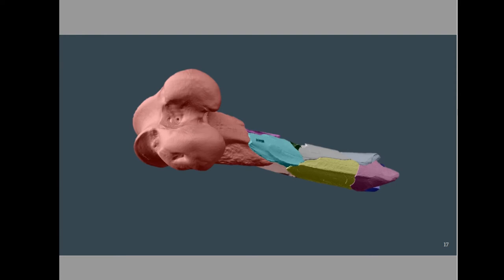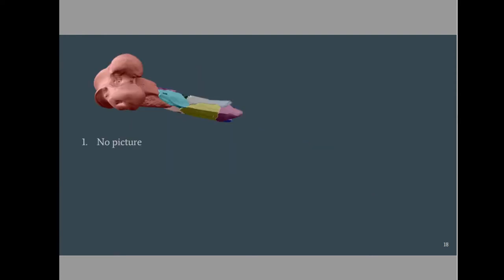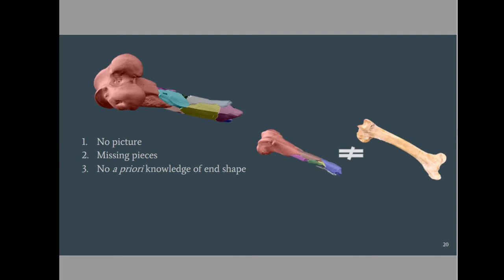Issues that we confront working with skeletal materials: no picture, we're missing pieces. Obviously Scruffy really enjoyed the proximal end of this femur, and we're missing some other pieces as well. Because of this, we don't really have knowledge of what the end shape is going to be, because it's certainly not going to look like an intact femur.